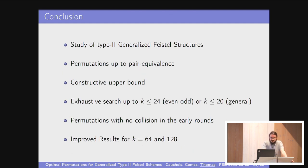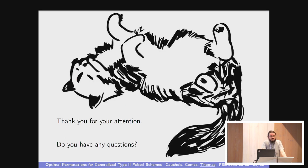So in conclusion, we studied type 2 generalized Feistel structures, where we studied permutations up to pair equivalence. We gave an upper bound on them, a constructive upper bound, which allowed us to run exhaustive search for up to 24 blocks for the even-odd case or 20 for the general case. We introduced this criterion, the collision depth criterion, which is the criterion when you want to avoid collisions in the first few rounds. And finally, we analyzed the graph constructions on the De Bruijn graph and improved the result for K equals 64 and 128. Thank you for your attention. Do you have any questions? Thank you very much.